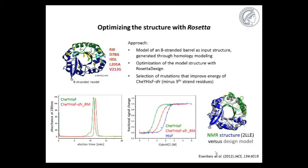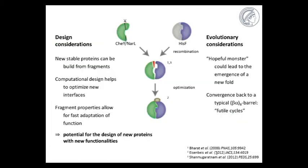So we can now sum up our experiments in this graph and showing that we can take a CheY-HISF fragment and place it into HISF. We can use this recombination approach from nature and build new stable proteins. Then we can use computational design in order to optimize a new interface. And we can actually also see, and I haven't showed you this here, but we can use the fragment properties of our fragments in order to adapt for new functionalities. For example, the phosphate binding site that we carried over from the HISF protein, we were able to optimize binding to a new ligand. And so we actually see that there is potential for the design of new proteins with new functionalities using fold fragments.